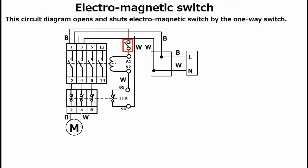This circuit diagram opens and shuts the electromagnetic switch by a one-way switch.